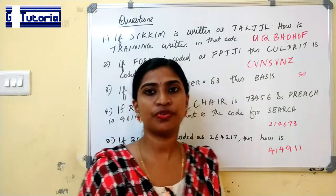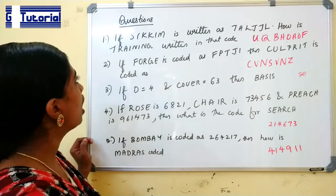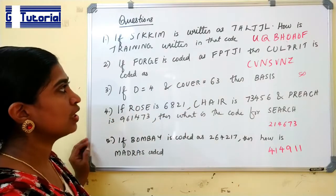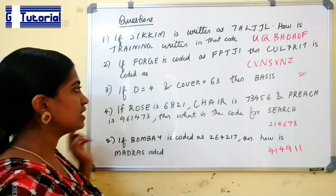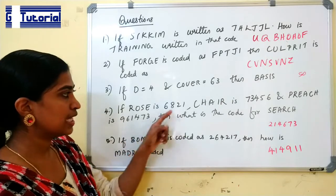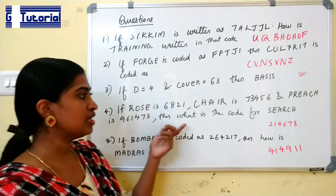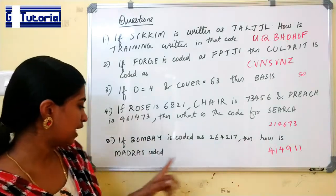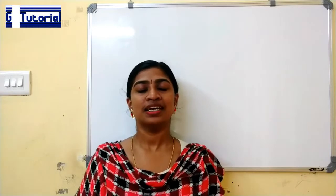These are some practice questions for you. First question is, if Sikkim is written as THLJJL, how is training written in this code? Next is, if Fort is coded as FPTJIE, then culprit is coded as what? If D equals 4 and cover equals 63, then what is the code for basics? If Rose is 6821, Chair is 73456 and Preach is 961473, then what is the code for search? If Bombay is coded as 264217, then how is Madras coded? If you are having any doubt, you can comment below. Please note your suggestions. Thank you.